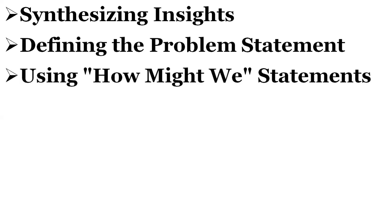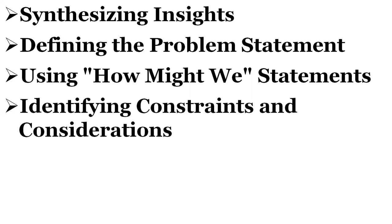The defined stage often involves transforming the problem statement into a series of how-might-we statements — open-ended questions that invite creative thinking and encourage brainstorming for potential solutions. For example, if the problem statement is 'how might we improve the public transport experience for commuters,' a corresponding how-might-we statement could be 'how might we provide real-time updates on bus schedules.' The team also identifies any constraints related to budget, resources, time, or technical feasibility.